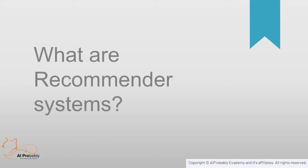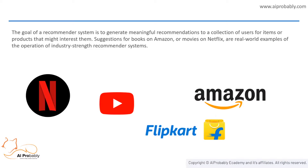So let's jump into knowing what a recommender system means. A layman's definition would be: a system that recommends something to a user based on their choice, selection, or taste. They are primarily used in commercial systems like Netflix, Amazon, Flipkart, YouTube, Spotify, Facebook, Twitter, Instagram, and a lot of social sites.